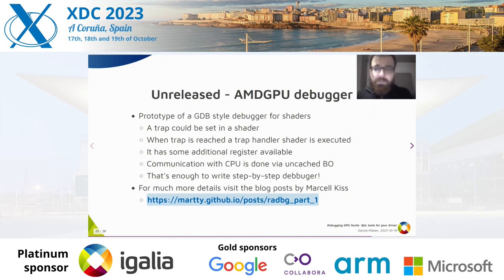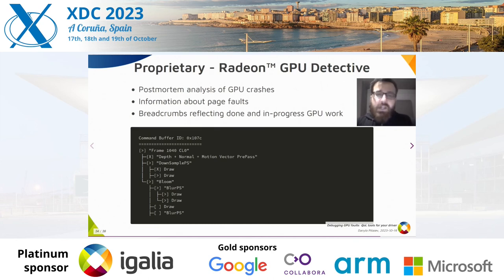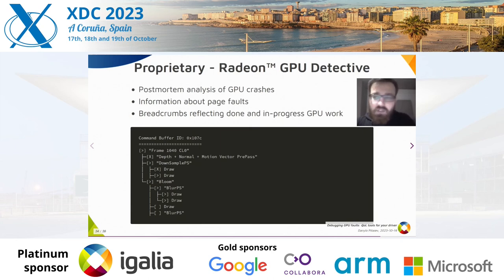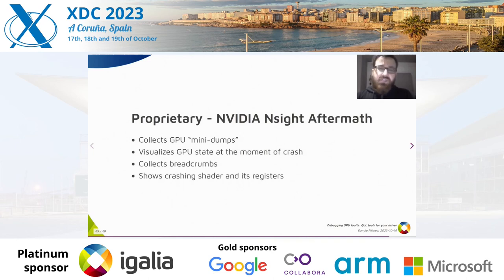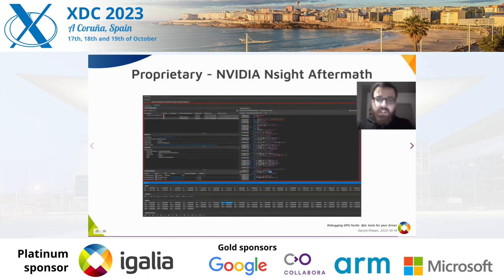That's all for open-source solutions. As for proprietary ones, most of the work in the debugging space is seemingly done for compute applications and not graphics ones. For AMD there is Radeon GPU Detective, which offers post-mortem analysis of GPU crash dumps, detailed information about page faults and breadcrumbs, similar to what Graphics Flight Recorder offers. For NVIDIA there is NVIDIA Nsight Aftermath, which builds upon NVIDIA Nsight. It makes it possible to collect GPU mini dumps, collect breadcrumbs, visualize GPU state at the moment of the crash, and show the crashing shader and its registers. That's almost all you want from a shader crash debugger, aside from step-by-step debugging.